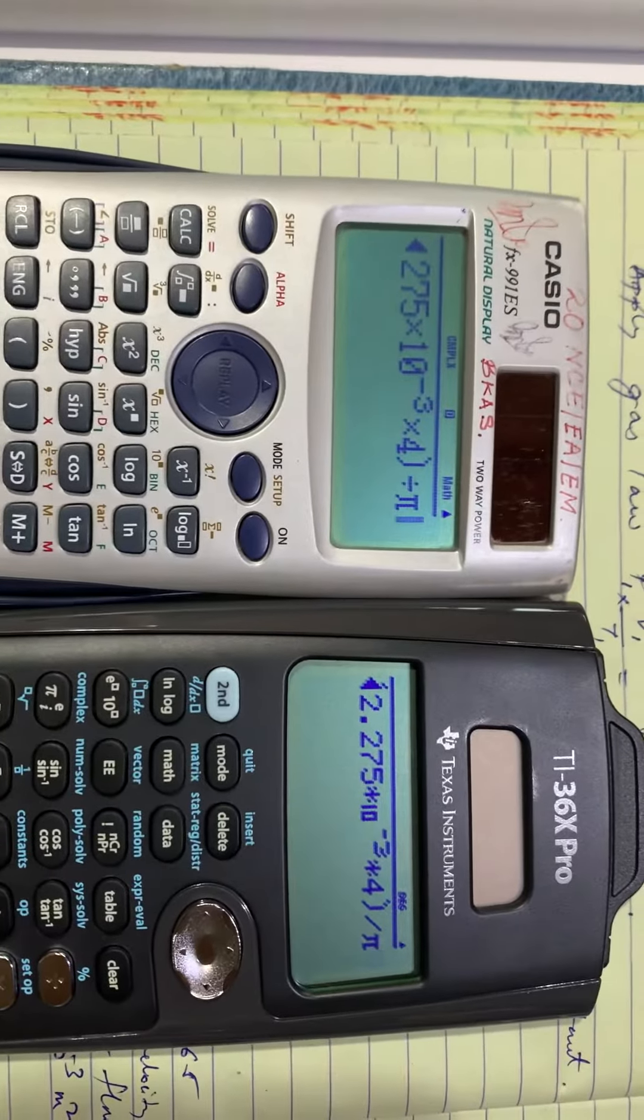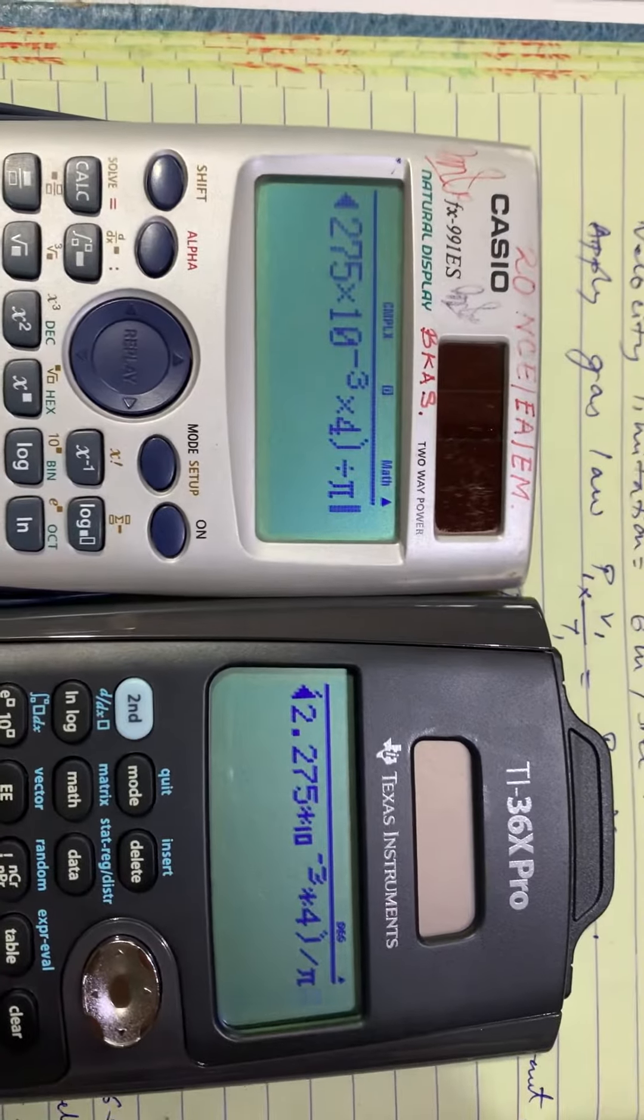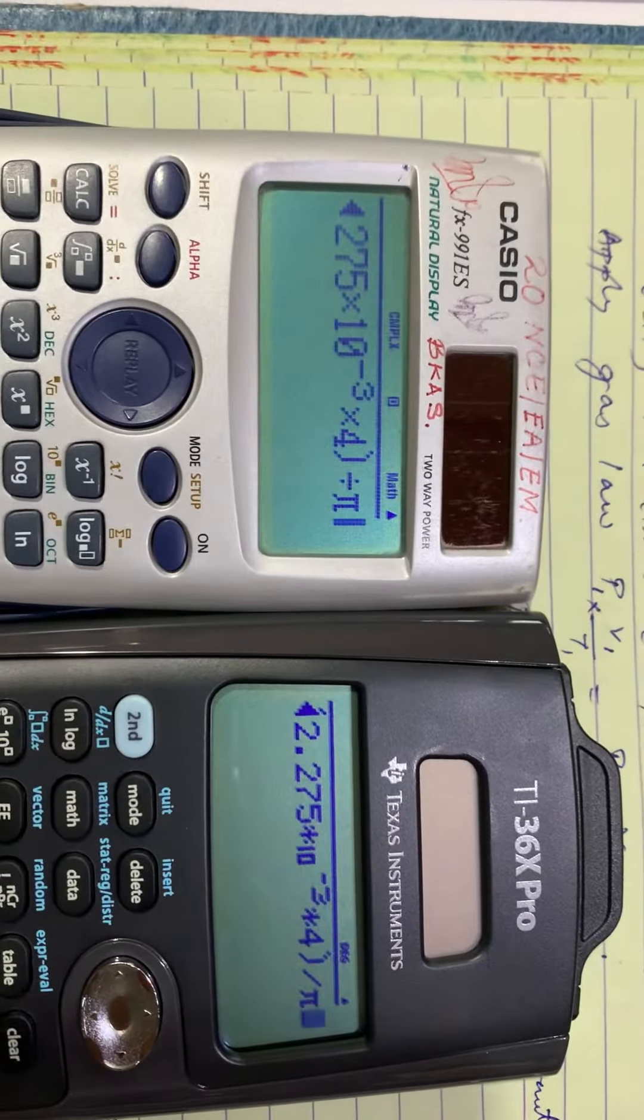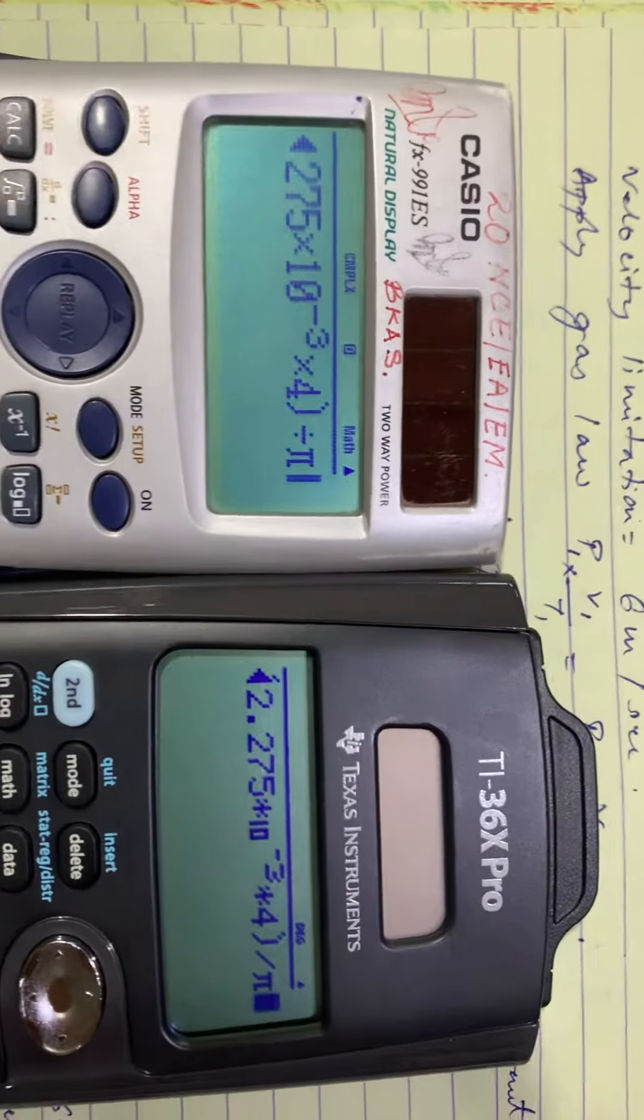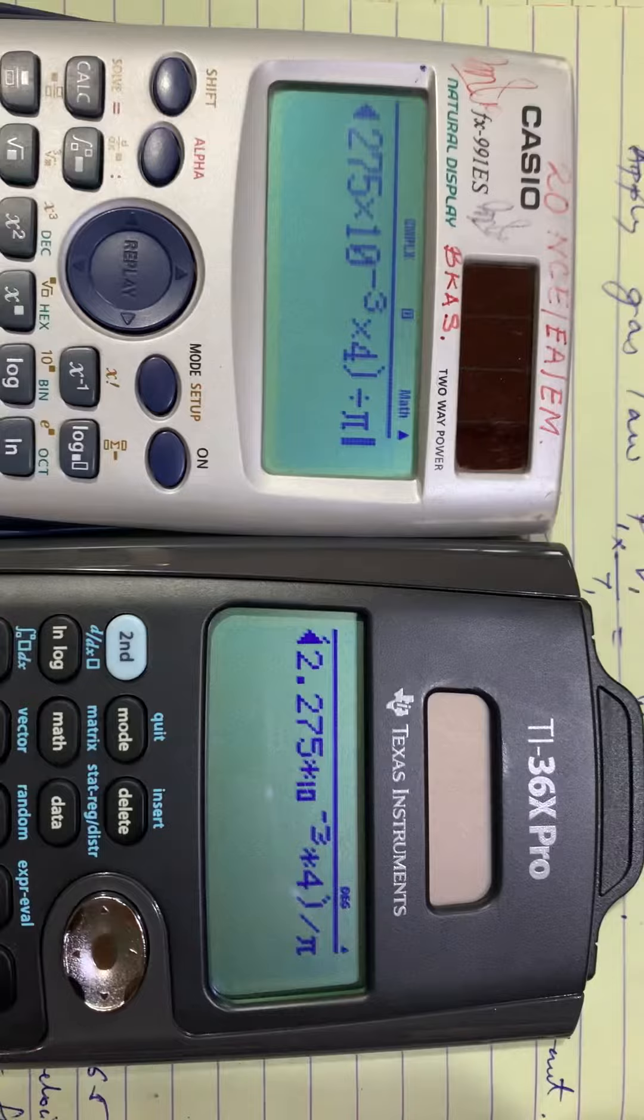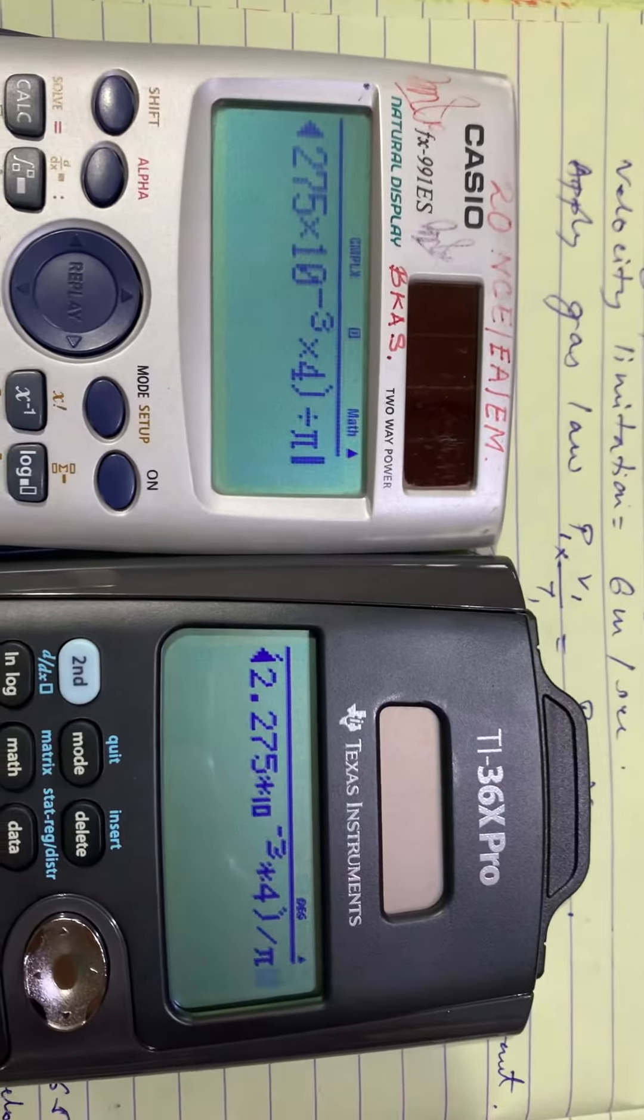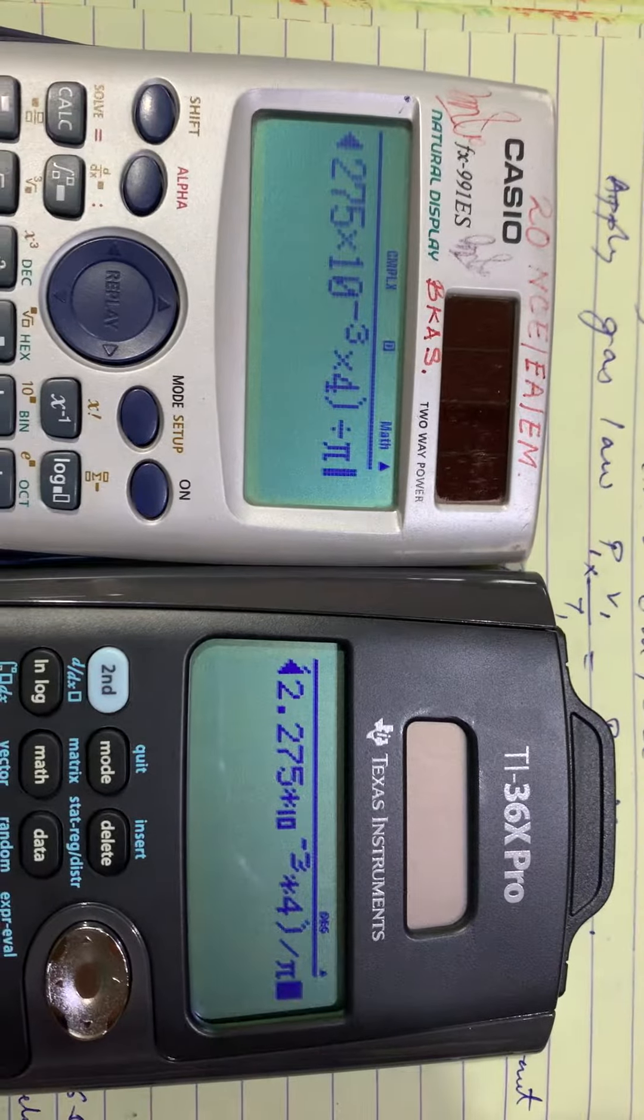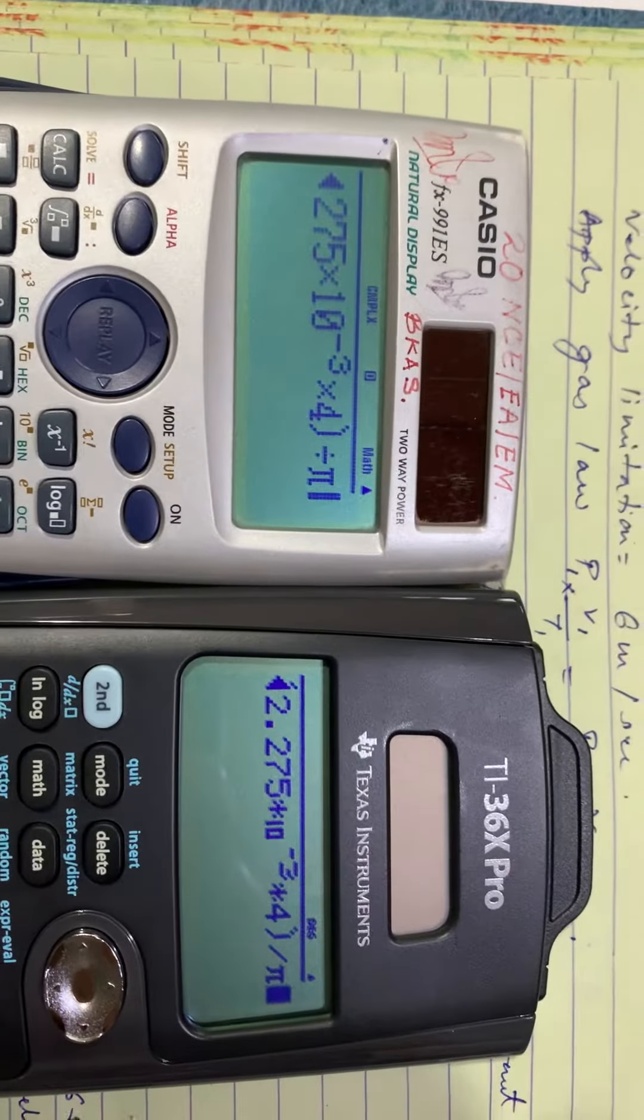This is a test for speed of processing for the Texas TI36X Pro and Casio FX911ES series natural display calculators. Let us find out the speed of calculation for this simple problem of pressure, velocity, and temperature equation.